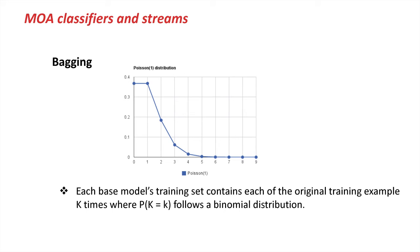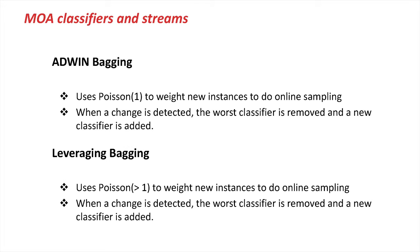Using that in online bagging makes it very easy. Whenever an example comes in you just draw a weight from the Poisson distribution for the first classifier, another weight for the second classifier, and so on for all classifiers — giving us a fully incremental setup. In MOA we have an algorithm called ADWIN Bagging that couples that with ADWIN for explicit change detection. We use Poisson with a mean of 1 to weight every example differently for every classifier, but we also detect when things deteriorate. We monitor the overall performance of the ensemble, and whenever things fall below a threshold we identify and remove the worst classifier, replacing it with a new one.